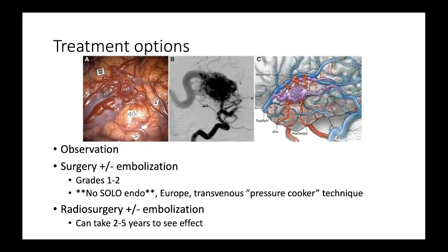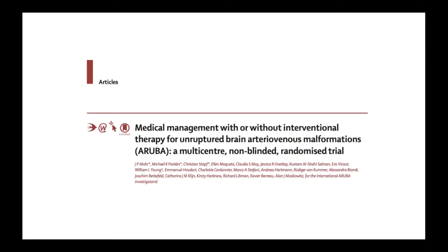Sole endovascular treatment is popular in Europe using the transvenous 'pressure cooker' technique, but it is very risky, and this contributed to Aruba trial results. In the U.S., embolization is used as an adjunct to surgery or radiosurgery. Radiosurgery is another option, with the caveat that the effect is not seen immediately - typically 2 to 5 years after treatment delivery.